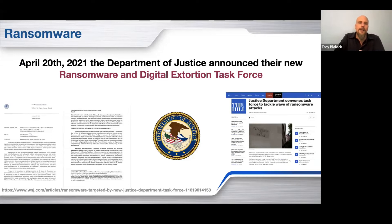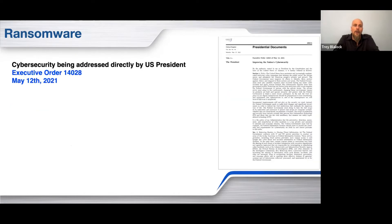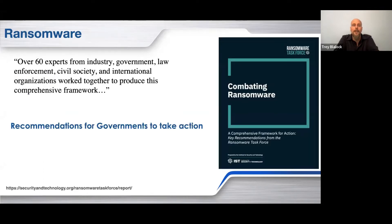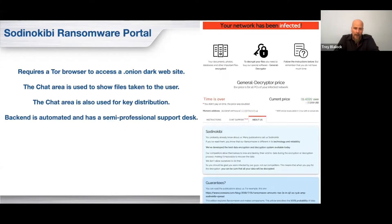The Department of Justice last year realized this has gotten so out of hand that they created their own group to handle ransomware and extortion. We've also seen executive orders to the president about dealing with ransomware. A group of 60 industry experts came together to make recommendations for governments around the world on what they can do to start fighting these ransomware problems. Right now, we don't see any end in sight.